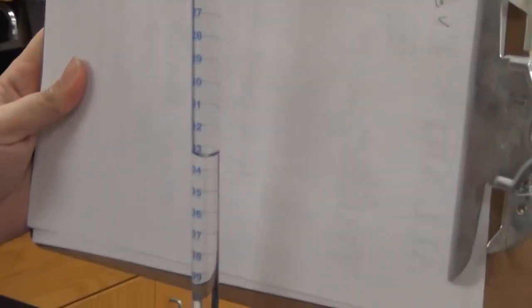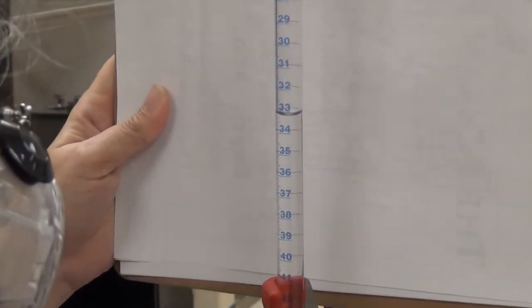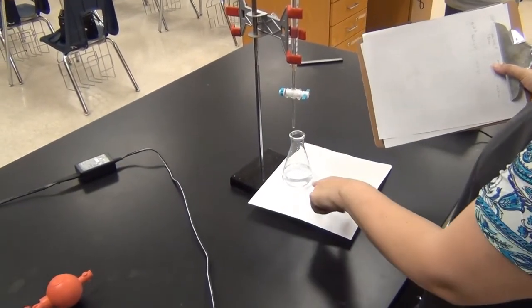Again, we put a white piece of paper behind it, we get eye level to it, so I have to bend down a little bit. And then between 33 and 34, and conveniently enough, and I promise I'm not faking this, that is 33 point two zero. 33 point two zero.